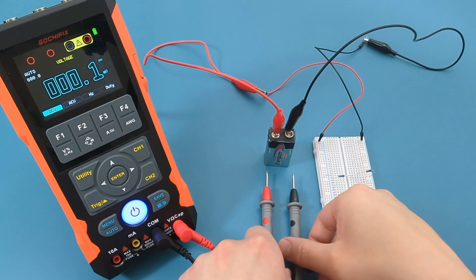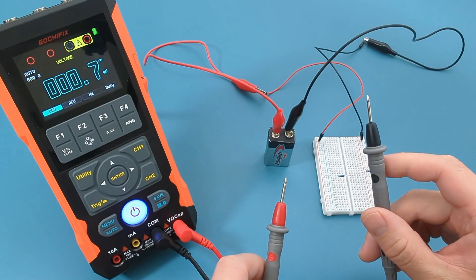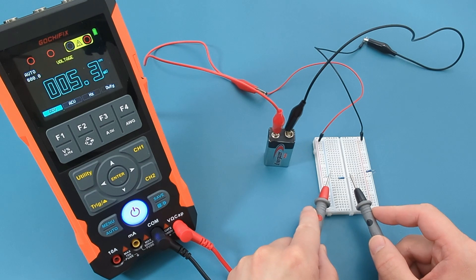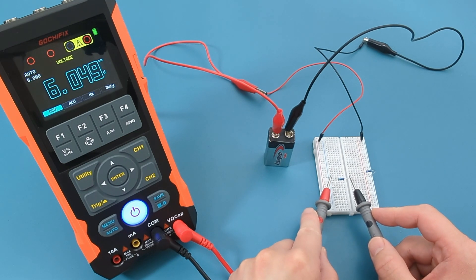Now let's check the voltage that passes through R1. Touch the red probe to the left side of the resistor, and the black probe to the right side of the resistor. The reading shows around 6 volts, which is what we expected.